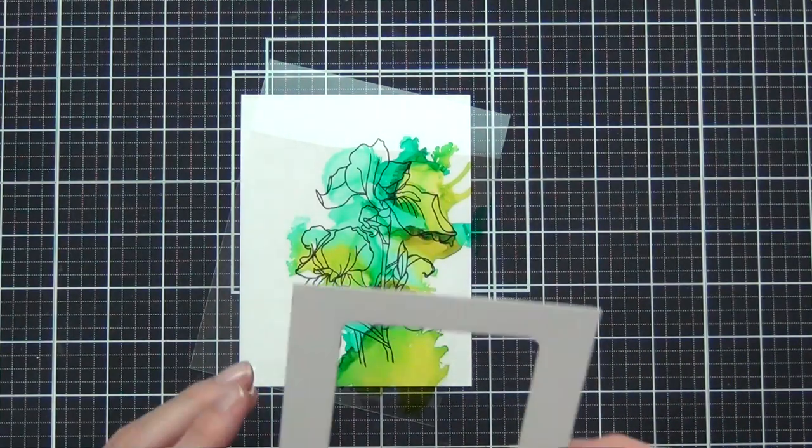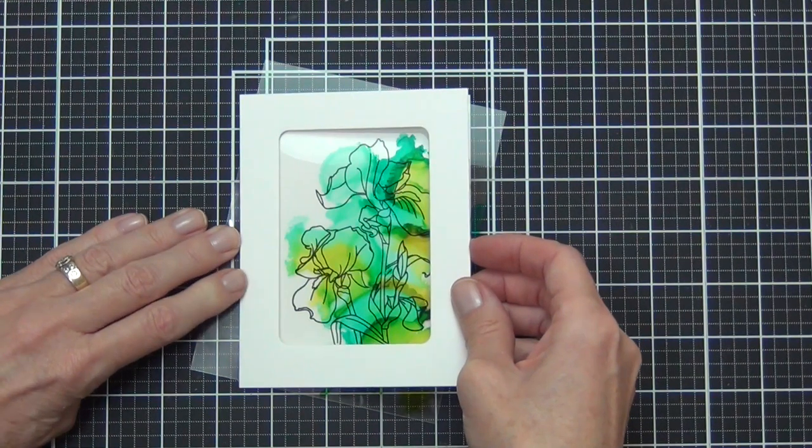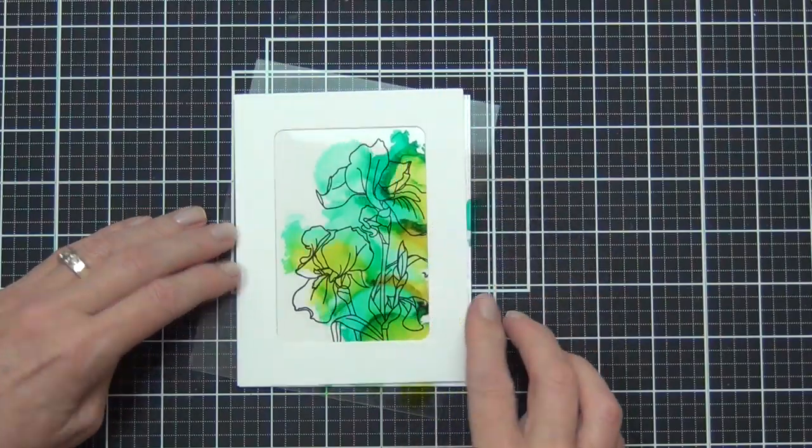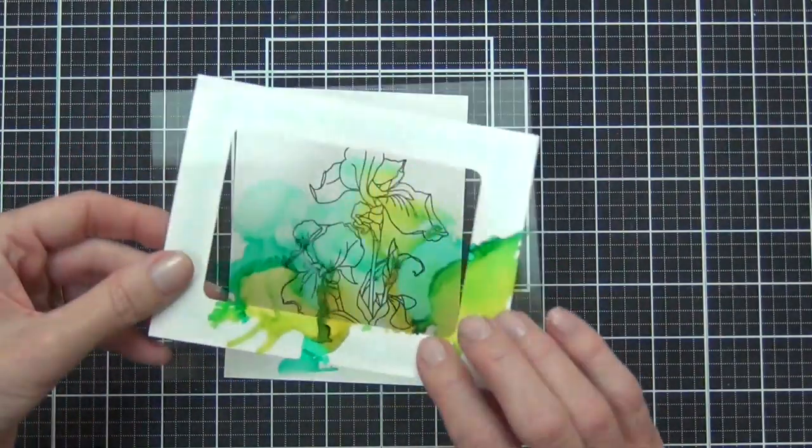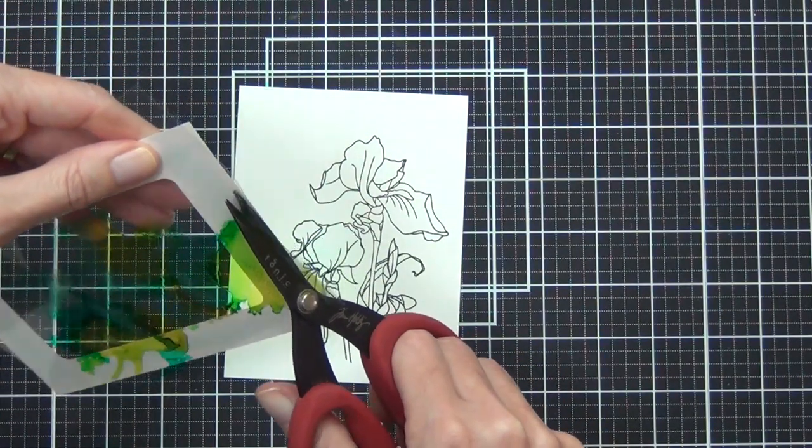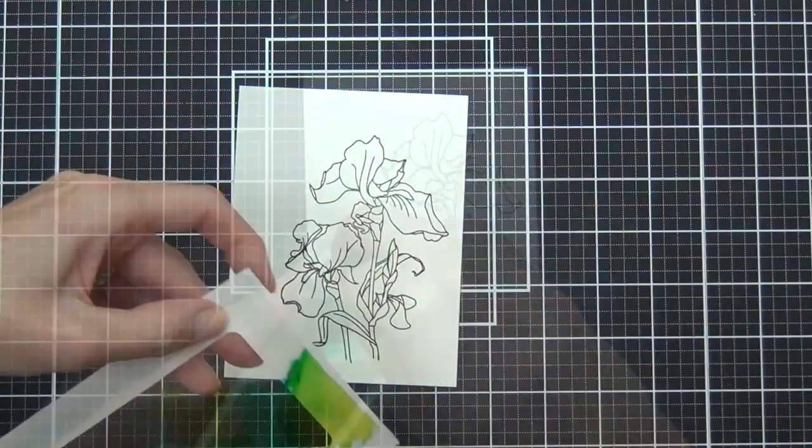over top. I've added some dotted adhesive, and this sticks really well to acetate—everything sticks to acetate. I've positioned it where I wanted the colors to sit over my stamped image. I can just use some scissors to cut the edges off.